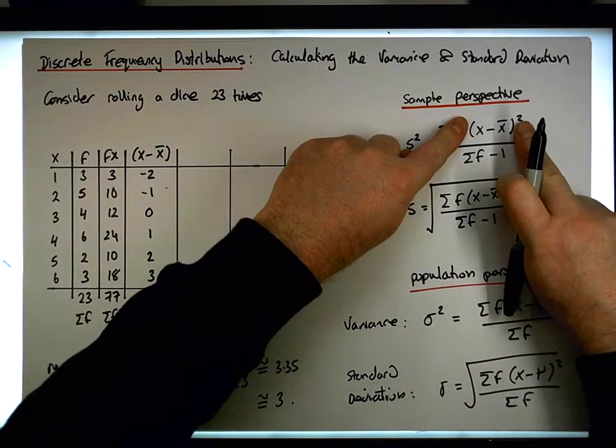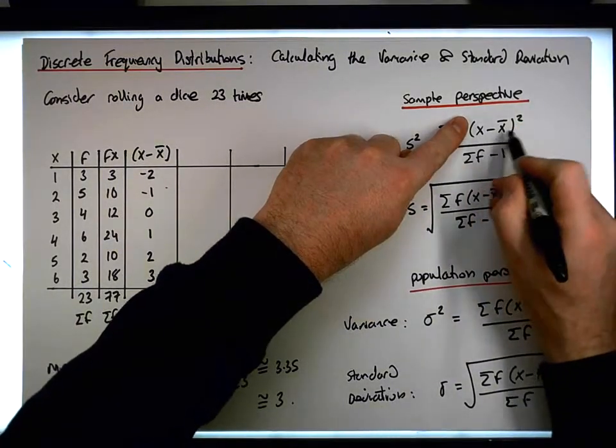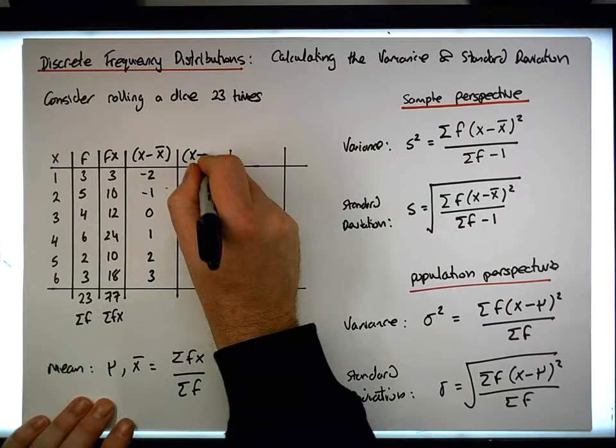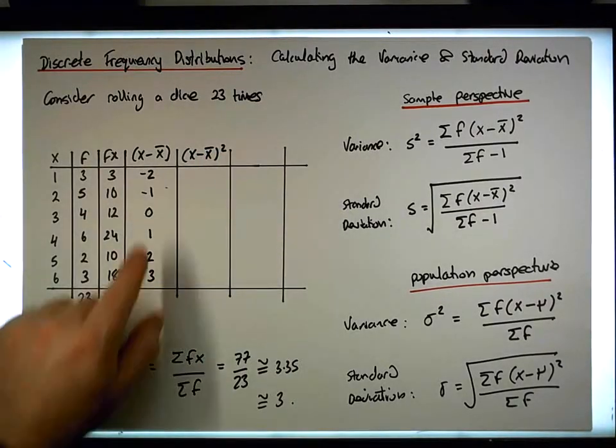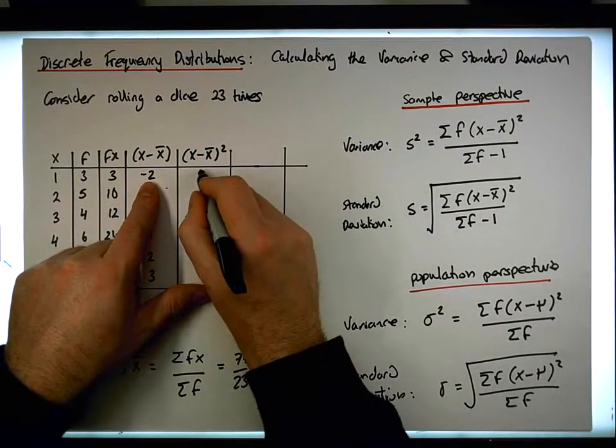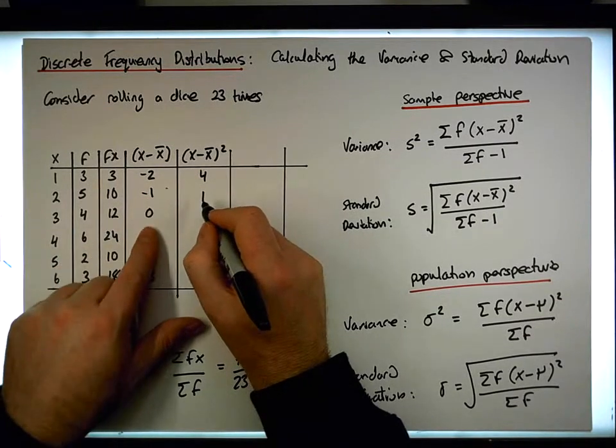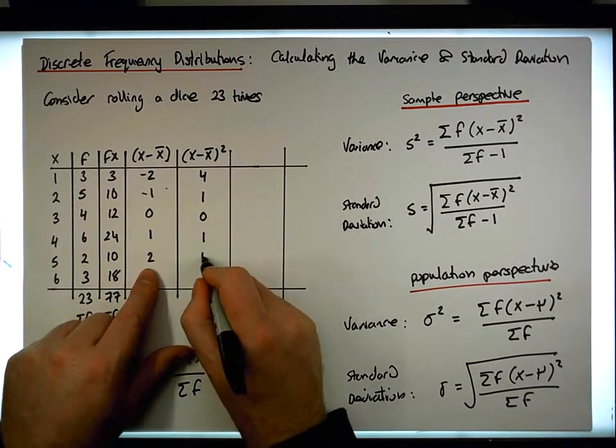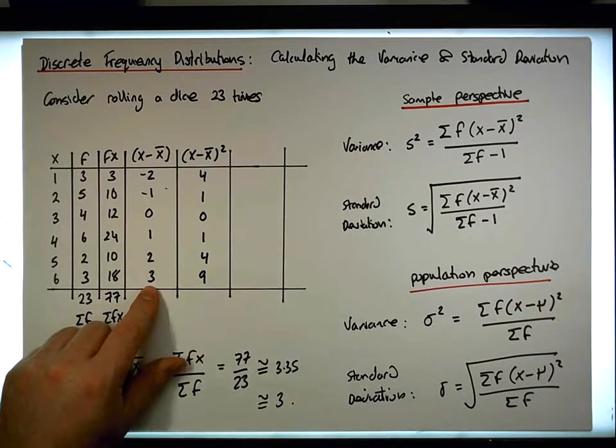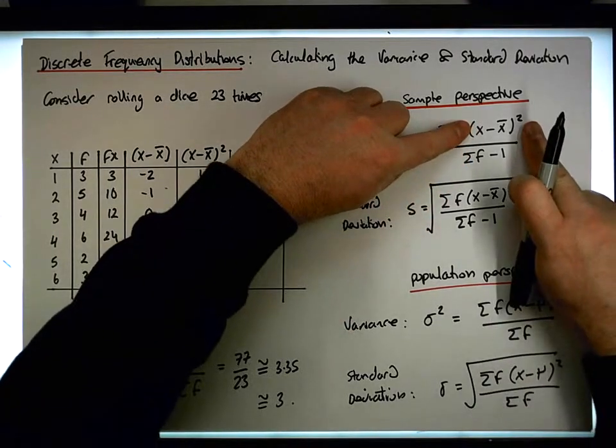But we need the square. We need the square of those values. So minus 2 squared gives me 4. Minus 1 squared gives me 1. 0 squared gives me 0. 1 squared is 1. 2 squared is 4. And 3 squared is 9. So we've just calculated this piece here.